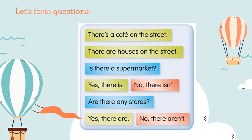Now we're going to learn how to form questions using there is and there are. So we saw the affirmative sentence like this: there is a cafe on the street. And for plural: there are houses on the street.